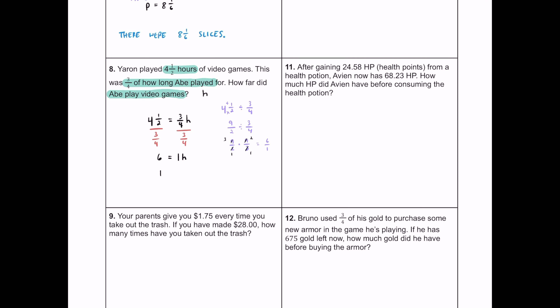We drop the one and say H equals six. Dividing both sides by three-fourths was the division property of equality. Dropping the one was the identity property of multiplication. Conclusion: Abe played for six hours. And if you take three-fourths of six hours, you get the four and a half hours that Yaron played.